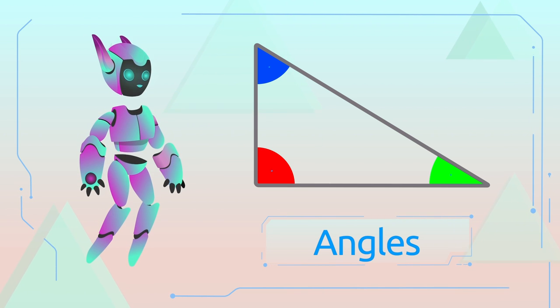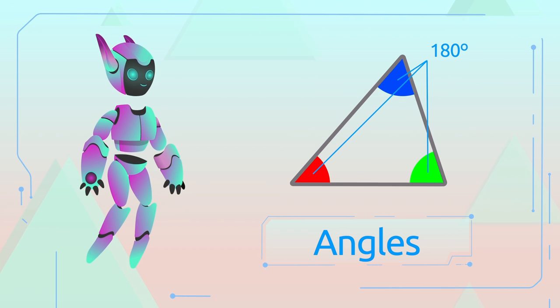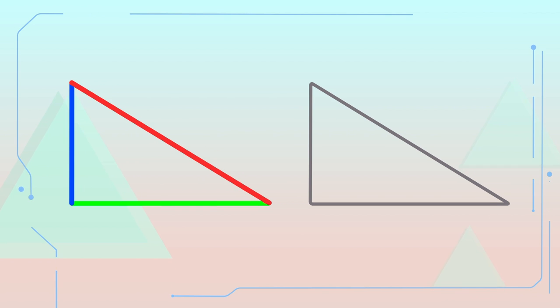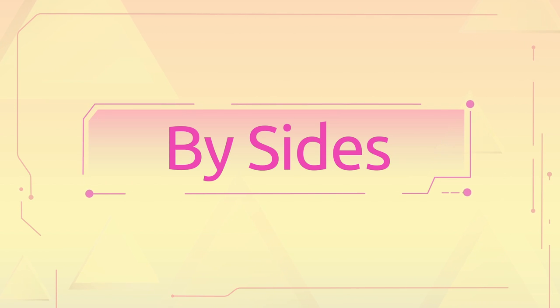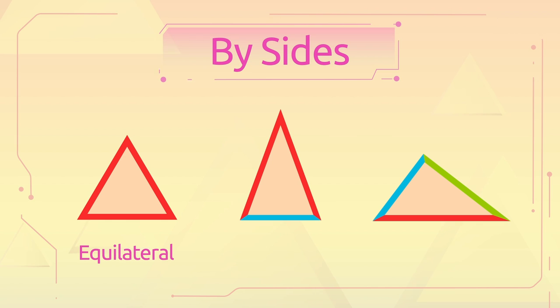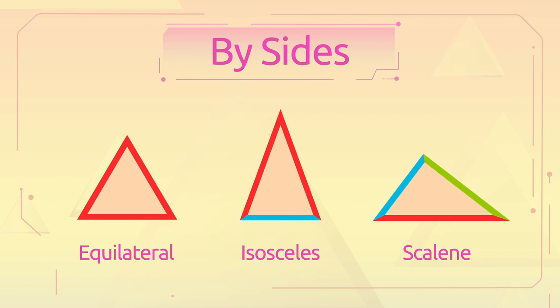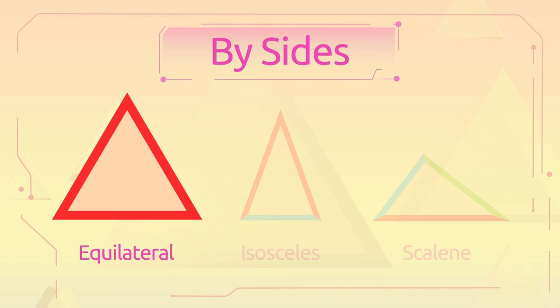Did you know that if we added all angles together the result would always be 180 degrees? We classify triangles depending on their sides or angles. If we classify triangles depending on their sides we get three types: equilateral, isosceles, and scalene. The triangle with three equal sides is called an equilateral triangle.